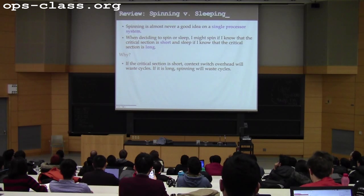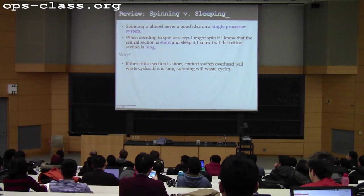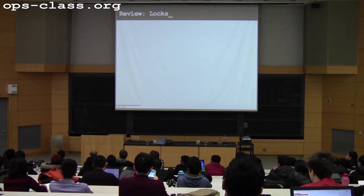The tradeoff here is the context switch overhead. If the critical section is too short, the context switch is longer than the critical section, so spin. If it's too long, the context switch is short relative to the work, so it's better to sleep.